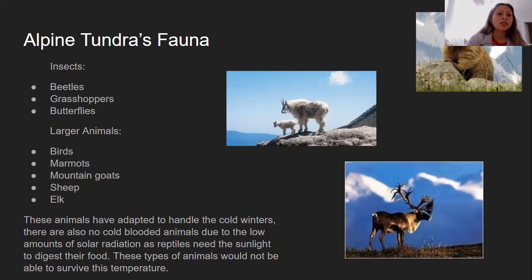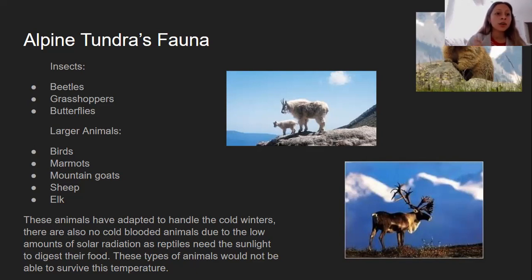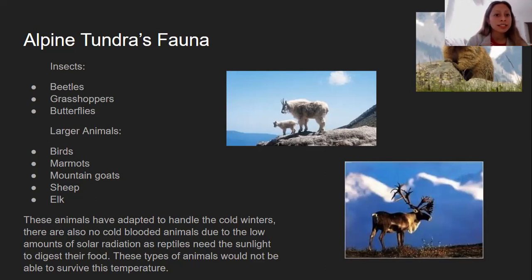Cold-blooded animals like reptiles don't tend to live in the tundra due to the little to no sunlight during winter — they would not be able to survive the low amounts of solar radiation. The animals that do live there must be specifically adaptable to cold temperatures and tend to have large amounts of fat on their bodies for insulation during the colder months.